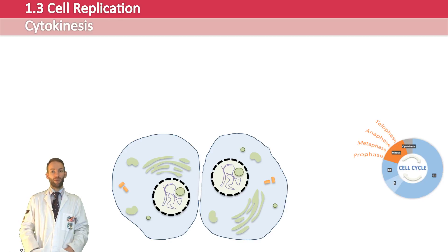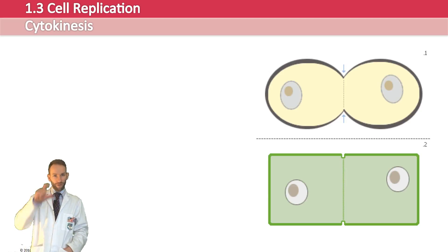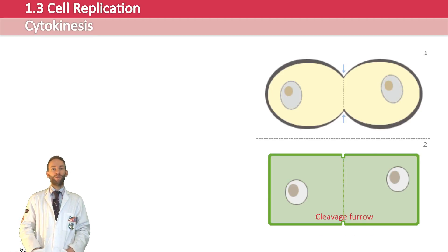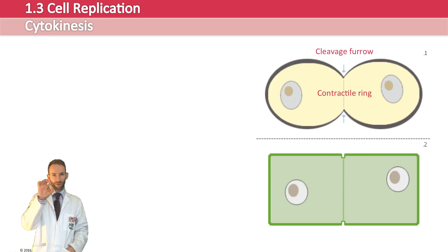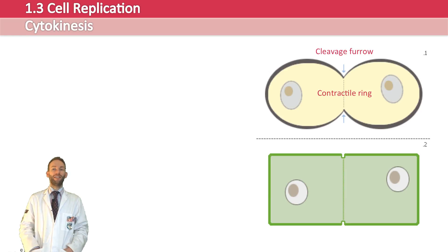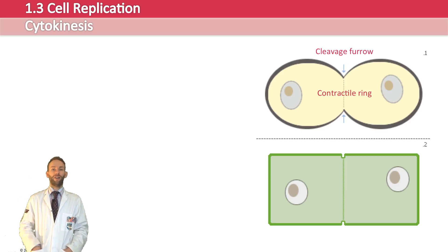Cytokinesis happens slightly differently in animal and plant cells due to the plant cell wall. In animal cells, the plasma membrane is pulled inwards around the equator — pinched in the middle to form a cleavage furrow. This is done by a contractile ring of protein made up of actin and myosin fibres, which squeeze around and pinch the middle of the cell to split it into two separate cells. In plant cells, a new cell wall forms across the equator — a middle lamella forms first, then cellulose is deposited on that structure.